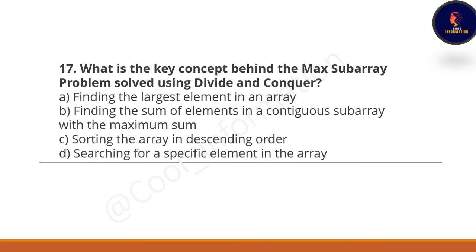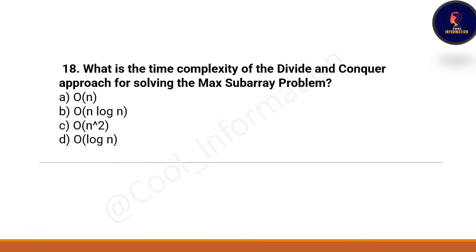Next question: what is the key concept behind the max subarray problem using divide and conquer? Option A is finding the largest element in an array — no, this is not correct. Option B is finding the sum of elements in the contiguous subarray with the maximum sum — yes, Option B is correct. Next: what is the time complexity of the divide and conquer approach for solving the max subarray problem? The correct option is Option B — O(n log n).